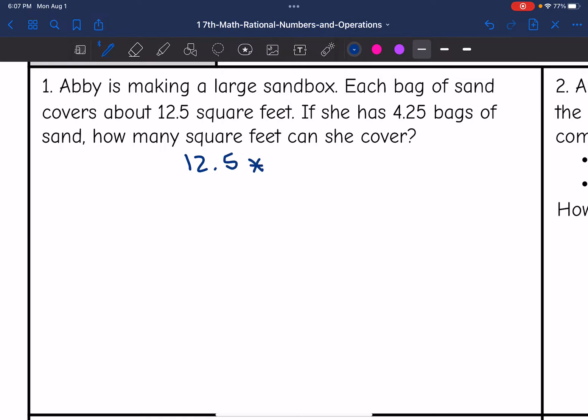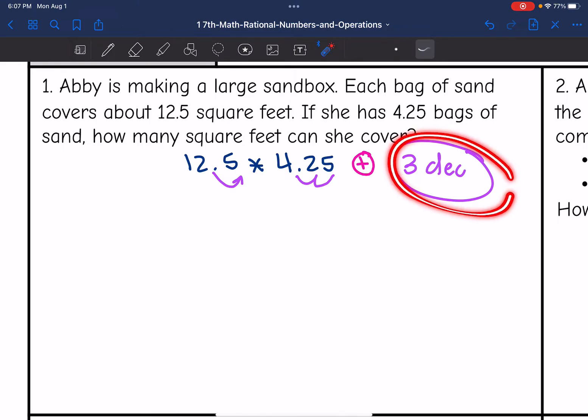Now let's think about our decimal operations rules. I have a positive times a positive, so my final answer will be positive. To multiply decimals, it's easier to change them into whole numbers. I will move this decimal once and this one twice. So in total, I'm moving three decimal spaces.